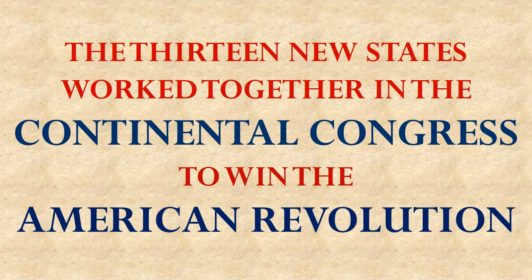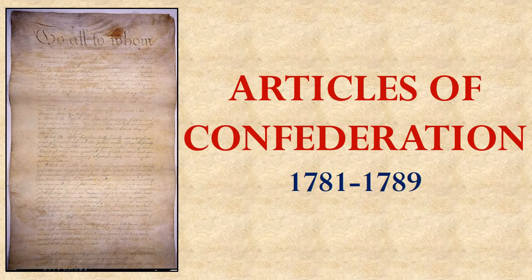The context and background for this is that the 13 new states created by the American Revolution worked together under the Continental Congress to win the American Revolution. But once the Revolution was over, they entered a new agreement called the Articles of the Confederation, which lasted in place for about eight years, binding these 13 separate little countries together.